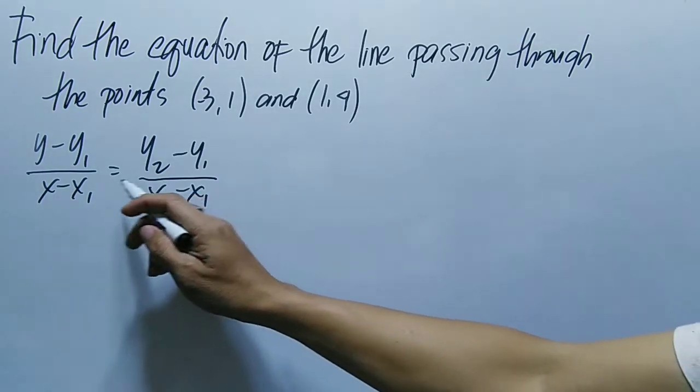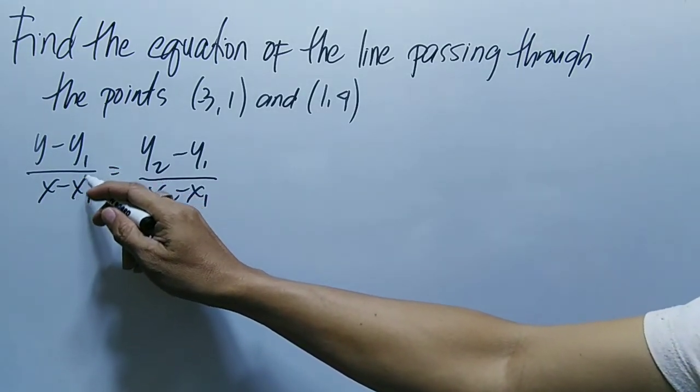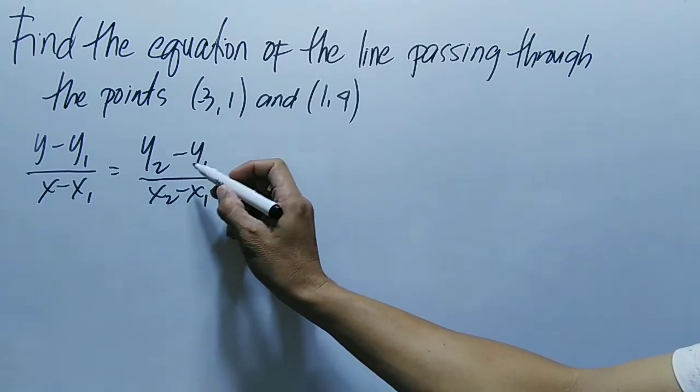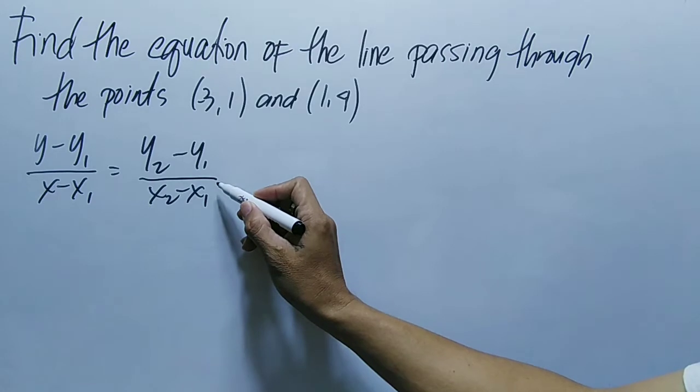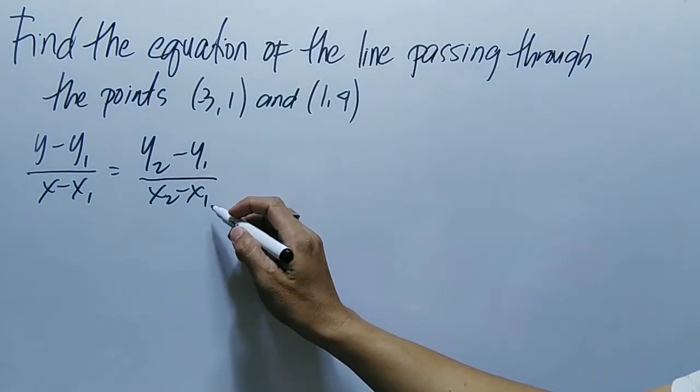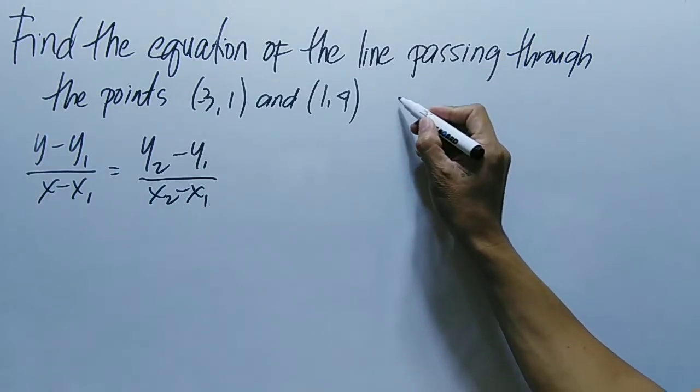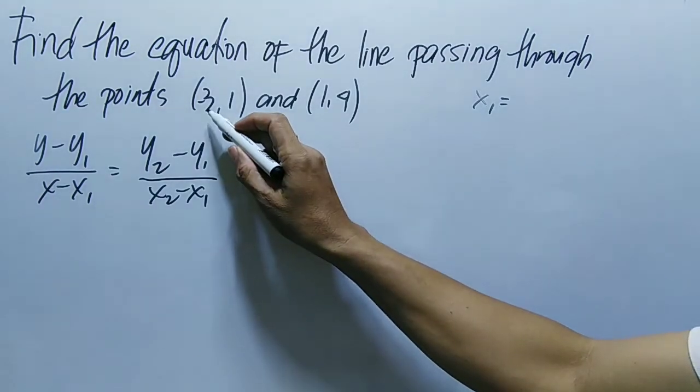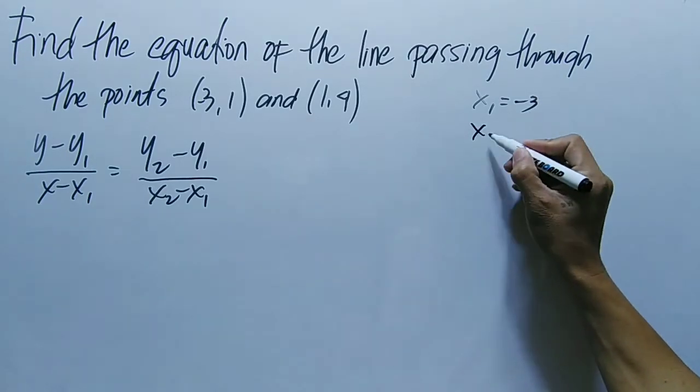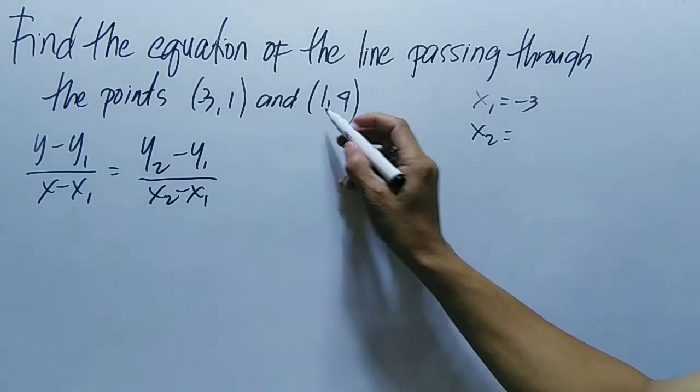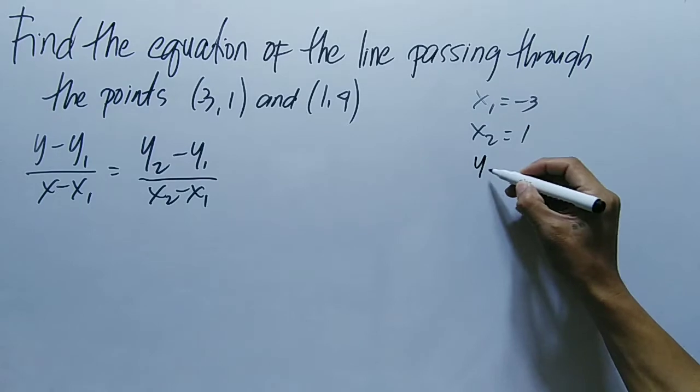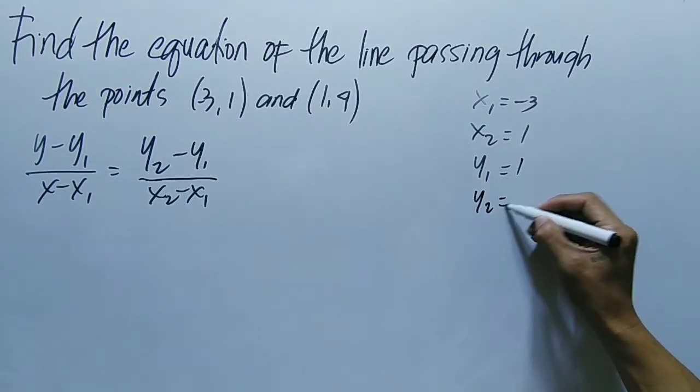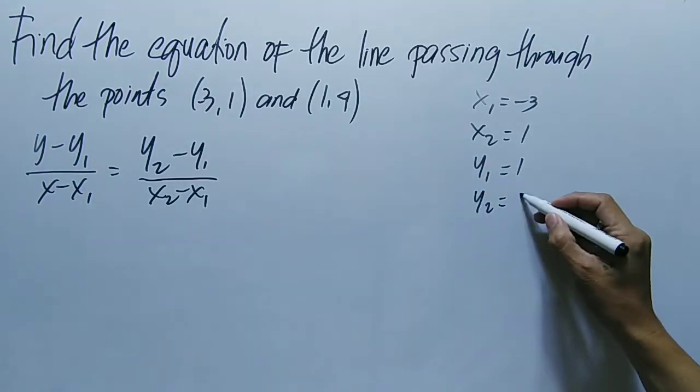(y - y₁)/(x - x₁) = (y₂ - y₁)/(x₂ - x₁). So first, let's identify the values. Our x₁ is -3 and x₂ is positive 1. y₁ is positive 1 and y₂ is positive 4.